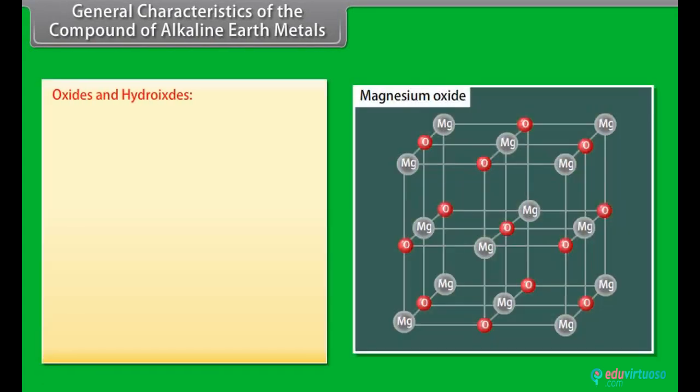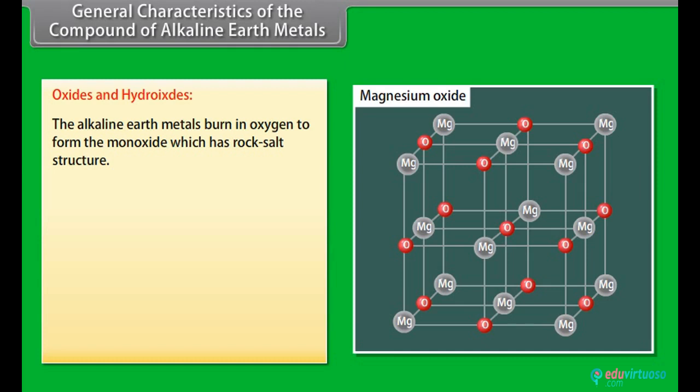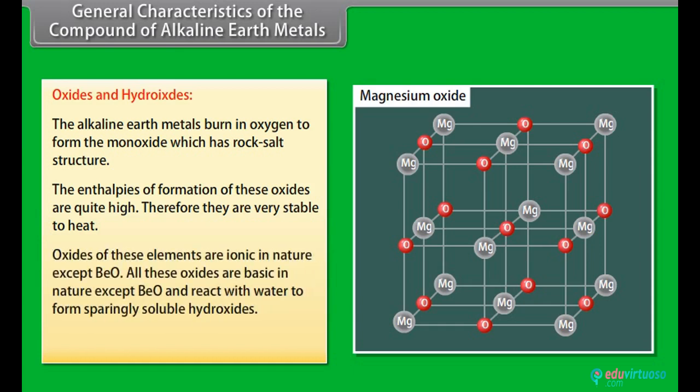General characteristics of the compounds of alkaline earth metals: Oxides and hydroxides. The alkaline earth metals burn in oxygen to form the monoxide which has rock salt structure. The enthalpies of formation of these oxides are quite high, therefore they are very stable to heat. Oxides of these elements are ionic in nature except BeO. All these oxides are basic in nature except BeO and react with water to form sparingly soluble hydroxides.